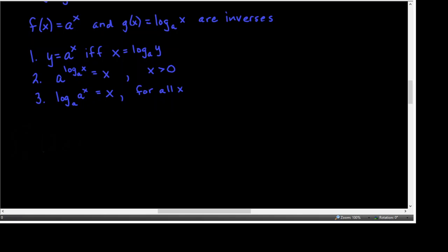The base 10 logarithm is called the common logarithmic function. A special version of the definition of logarithm: if y equals 10 to the x, then x equals log base 10 of y — technically. But nobody writes that base 10; it's assumed to be 10. It's kind of like when you write square root, you generally don't write the 2 there. The only one where we don't write the index is the 2 because it's so common. Likewise for the logarithm — especially because of the sciences where they use base 10 all the time — log base 10 is ubiquitous and common practice is not to write the base 10.